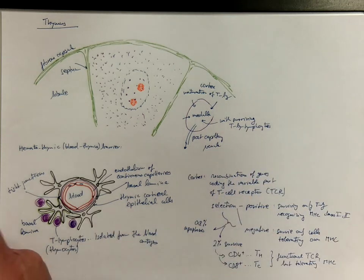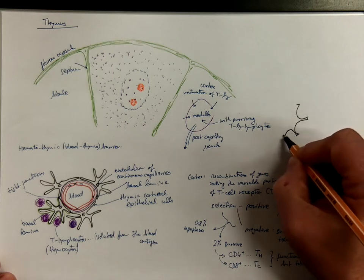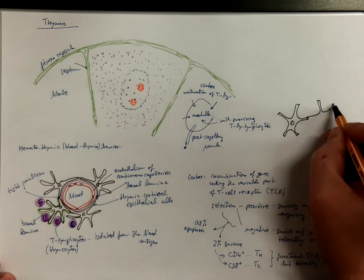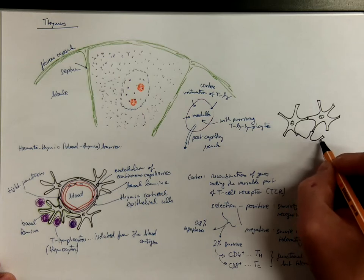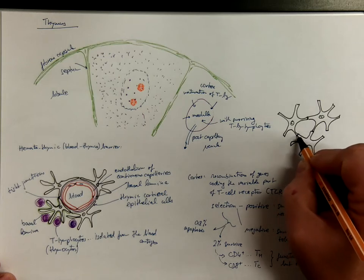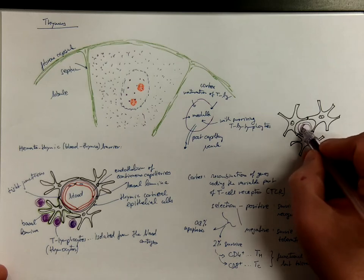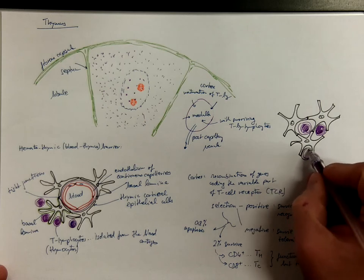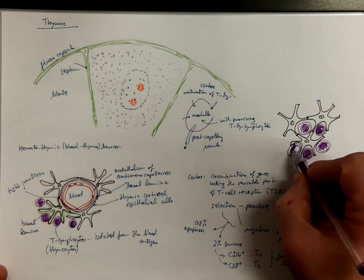The medulla looks a little bit different. We got this network of reticular cells connected by desmosomes, and this network provides support to lymphocytes. That's the reason it's so difficult to see the reticular cells in routine sections, because they seem to be hiding behind the network, especially if you got a thicker histological section.